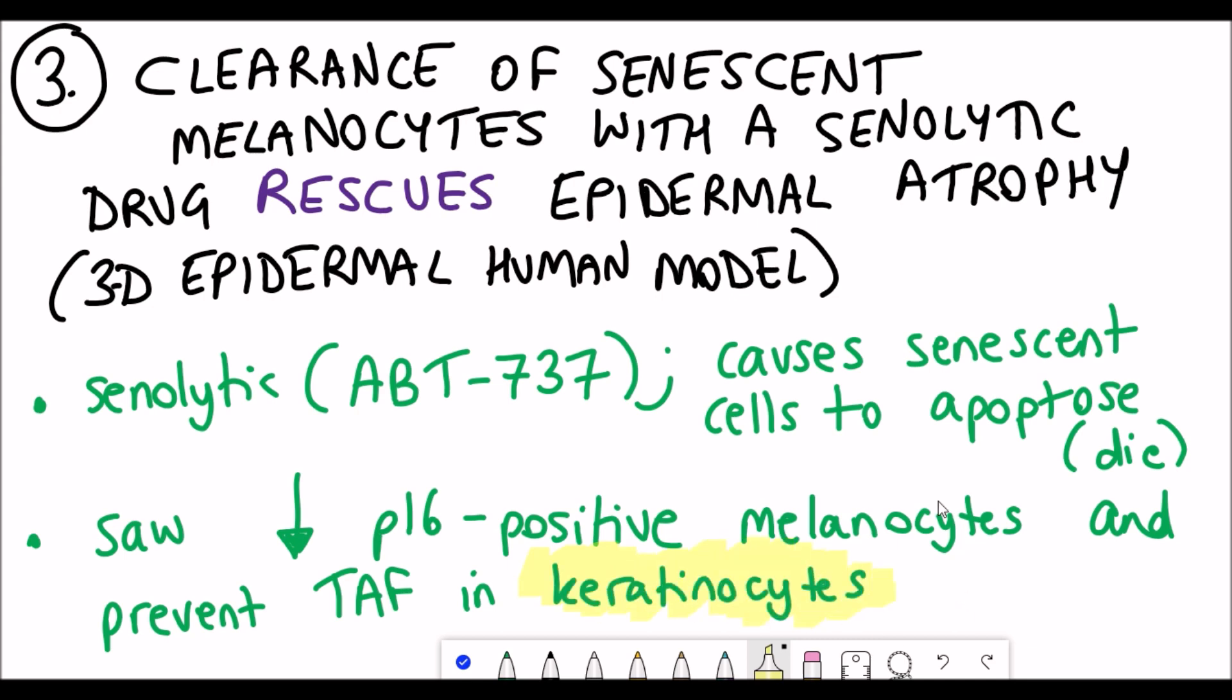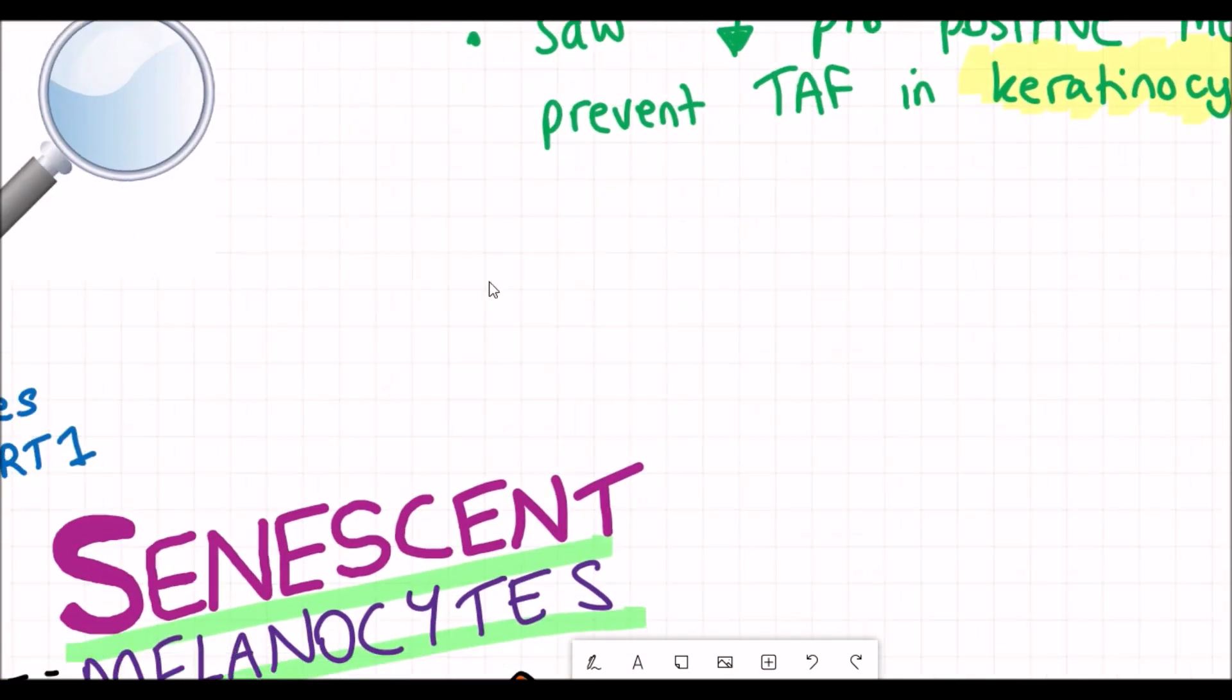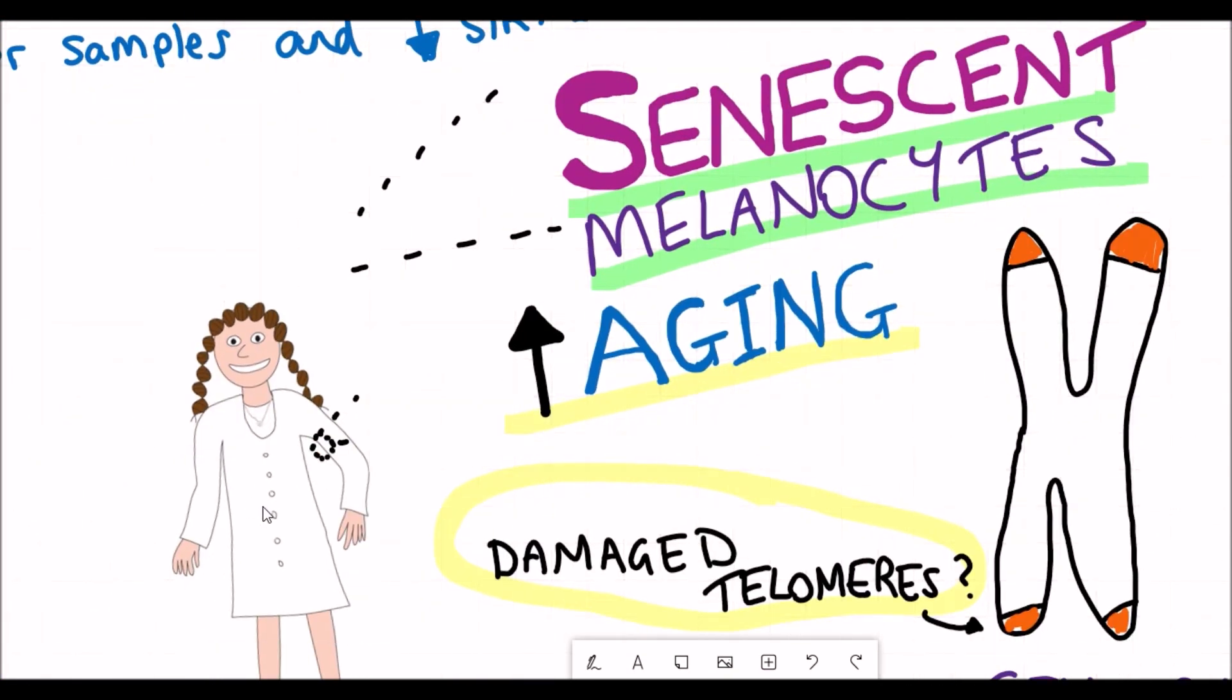Since skin aging is thought to be due to the loss of the replicative capacity of these keratinocytes, this therefore shows a direct link between senescence induction, loss of keratinocyte proliferation, and skin aging.